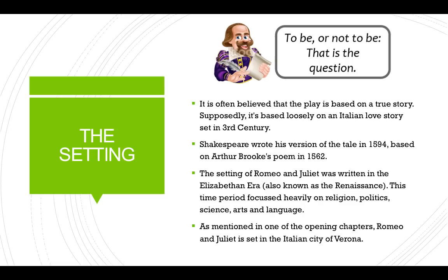So the setting. It's often believed that the play is based on a true story — supposedly loosely based on an Italian love story set in the 3rd century. Shakespeare wrote his version of the tale in 1594, based on Arthur Brooks' poem from 1562. The setting of Romeo and Juliet was written in the Elizabethan era, also known as the Renaissance.